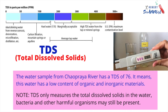The water sample from Chowpraya River has a TDS of 76, which means this water has a low content of organic and inorganic materials. Is it safe for drinking? We must remember that TDS only measures the total dissolved solids in the water. Bacteria and other harmful organisms may still be present.